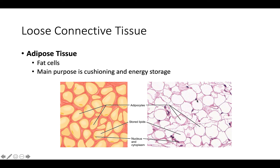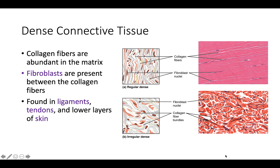Adipose tissue kind of looks like chicken wire, with nuclei always pushed off to the sides. Moving on to dense connective tissue — there are two types. The first has collagen fibers running in one direction; it's very ordered and regular. This is dense regular elastic tissue. It contains elastic fibers in addition to collagen fibers, and it allows ligaments to return to their original length after stretching, helping body joints move back and forth.